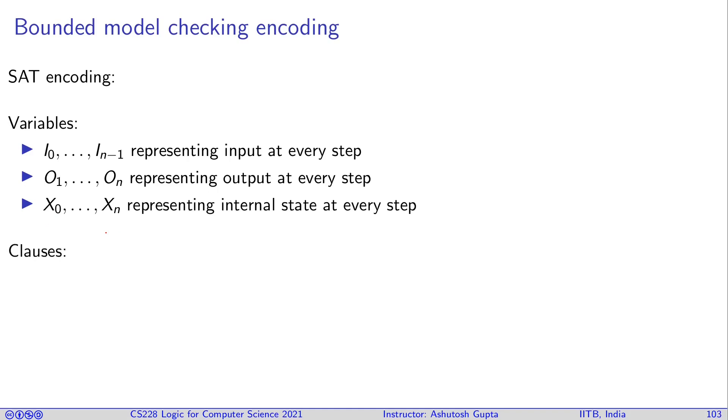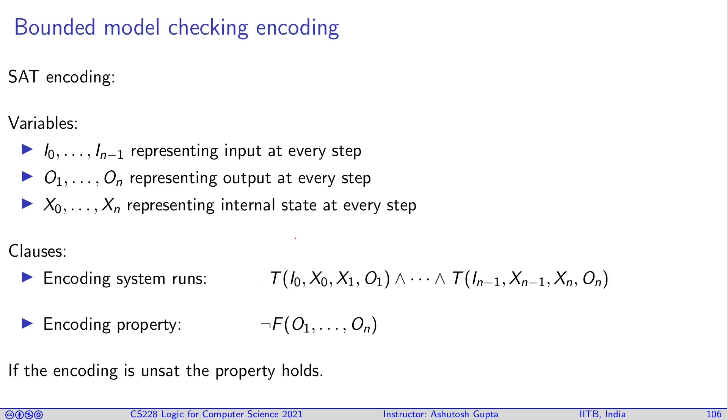Now write down the clauses. So encoding system runs, you basically have a transition system. You encode like the first input variables and the first state should apply on a transition system and then produce the next one, x_1, o_1, then x_1, o_1 goes in and produces x_2, o_2, and so on and so forth. These constraints together should be encoding the runs of your system. o_1 and o_2 and all these variables go in this property and it's, does this does not hold?